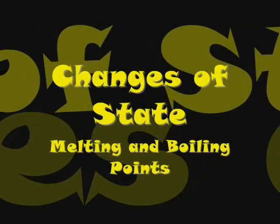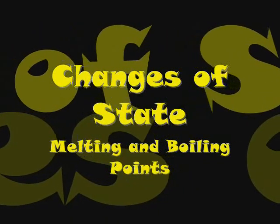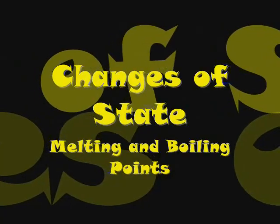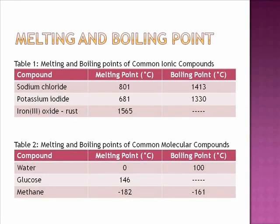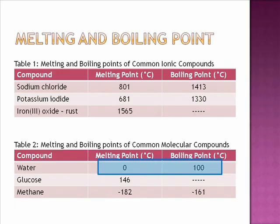If you still need more information to make a decision as to whether or not the substance is an ionic compound, there are always the melting and boiling points. Here we have two tables. In table one, we have a list of the melting and boiling points of some common ionic compounds. In table two, we have the same properties for the common molecular compounds. If we compare the melting and boiling points of sodium chloride and water, we see that the melting and boiling points for sodium chloride are much higher than that of water. This is a common feature of ionic compounds — compared to molecular substances, they require a large amount of energy to melt and boil.